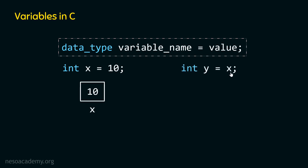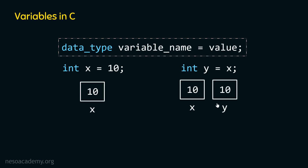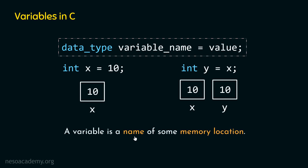If we write the statement int y equal to x, then first memory for variable y is created, enough to store an integer value because the type is int. And y equal to x means whatever is inside x must be stored inside y. We know that variable x holds value 10, so y must also hold value 10. This means a new copy is created. Value of x is assigned to y. So in a nutshell, a variable is the name of some memory location — a name given to a memory location — so we can refer to a specific memory location by its name.